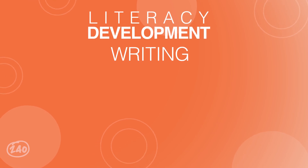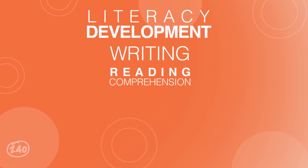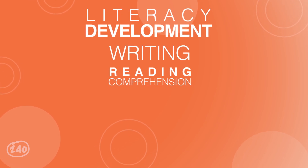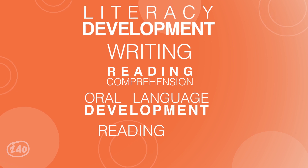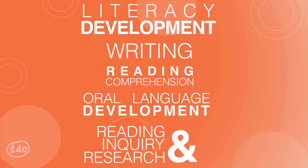The English subtest of the Core Subjects EC through 6 has 13 different competencies, but it can be neatly divided into five different sections: literacy development, writing, reading comprehension, oral language development, and reading inquiry and research. Let's start with the biggest — literacy development.